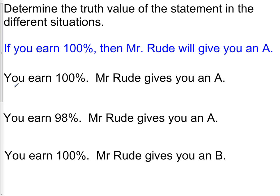You took a test, you earned 100%. Mr. Rude gives you an A. Should this happen? In other words, is this true or is this false? What we've been told is when you get 100%, you will get an A. You took the test, you got 100%, and you received the A. That is true.